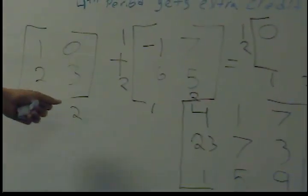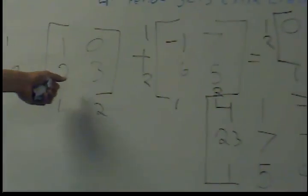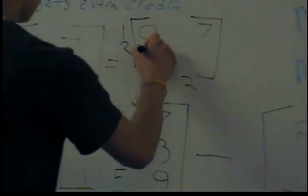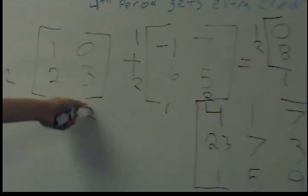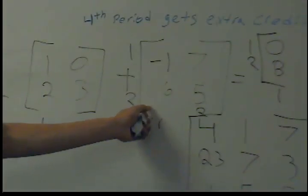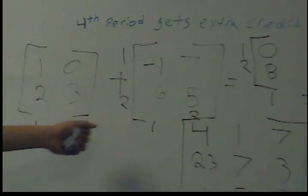Row 2, column 1. Row 2, column 1, which is 2 plus 6 is 8. And then row 2, column 2 plus row 2, column 2, which is just 3 plus 5, which is 8 again.